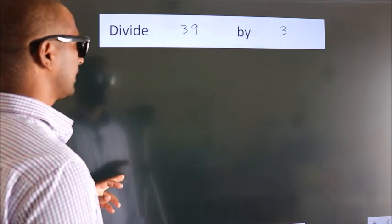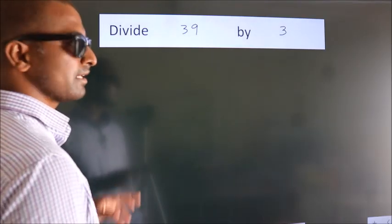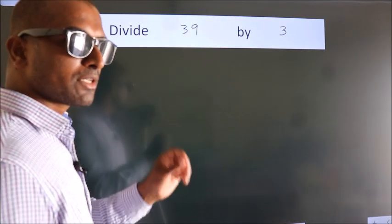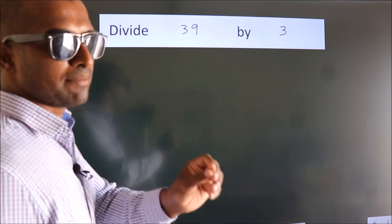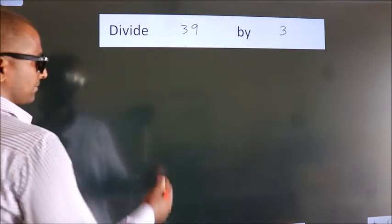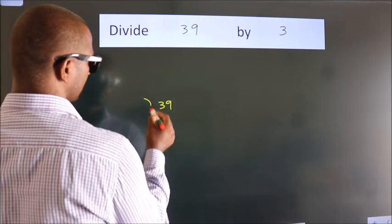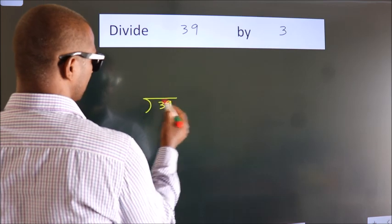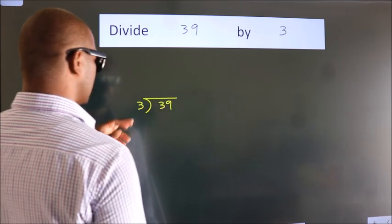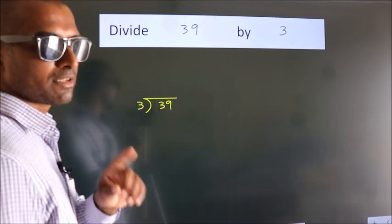Divide 39 by 3. To do this division, we should frame it in this way: 39 here, 3 here. This is your step 1.